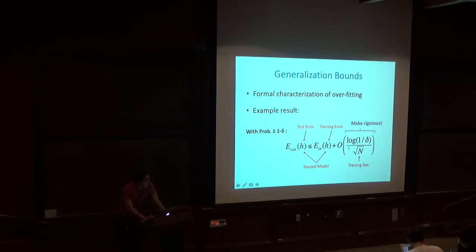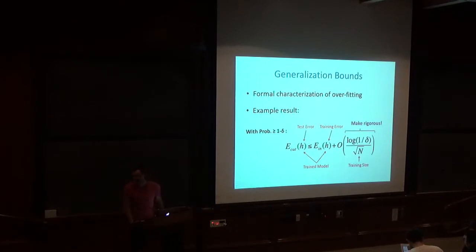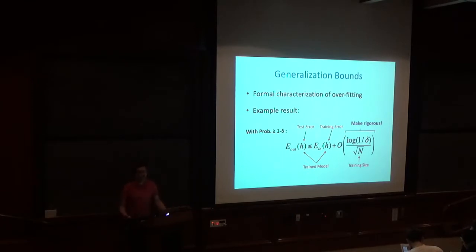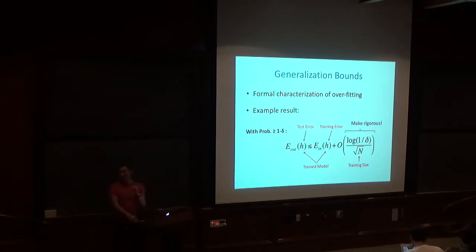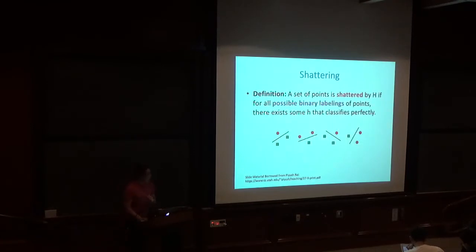Clearly from experiments and homeworks at the beginning of class, the complexity of the function class makes a big difference — linear versus quadratic versus cubic. So there must be something in the big-O we need to analyze more rigorously to say how this bound deviates depending on the model class. One concept that can help characterize this, at least for a linear function class, is a notion known as shattering.